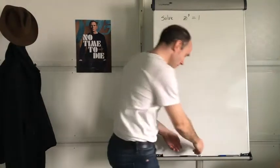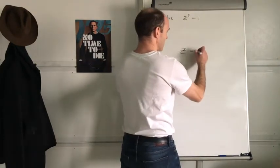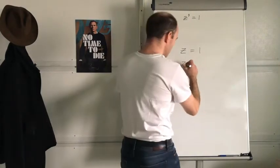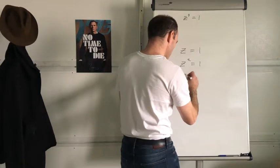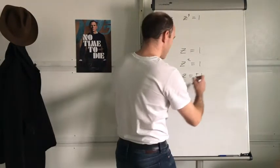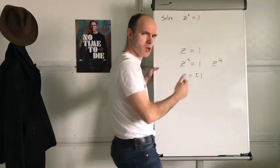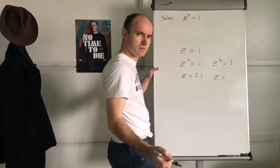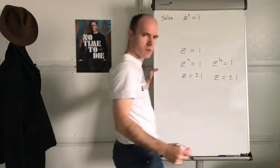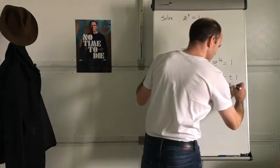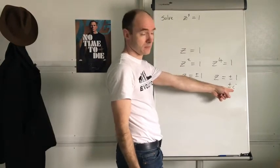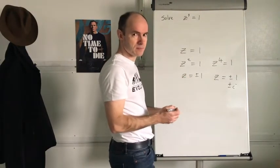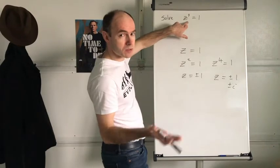Why are there three solutions? Well, if I have a really simple expression — not really an equation — Z equals 1: one answer. Quadratic: Z squared equals 1, two possible answers, Z equals positive and negative 1. Let's try a quartic — skip the cubic. Z to the power of 4 equals 1. So Z equals what? Plus or minus 1, and the other two answers are plus or minus i. If you do i to the power of 4, you get 1. Negative i to the power of 4 equals 1. What I'm trying to show is that because this is a cubic, there are going to be three solutions.